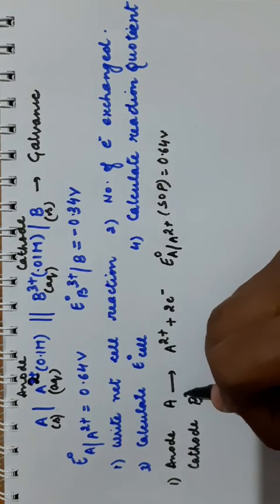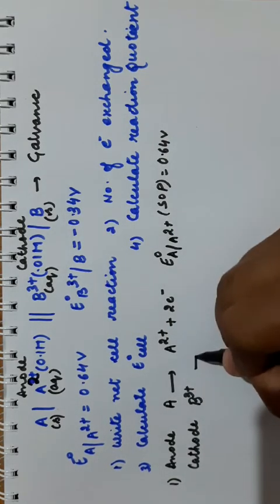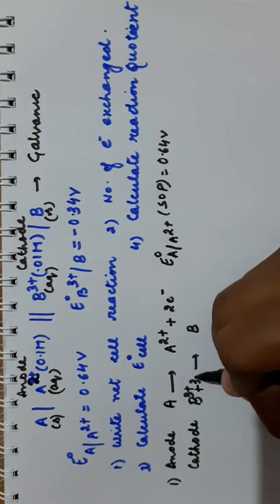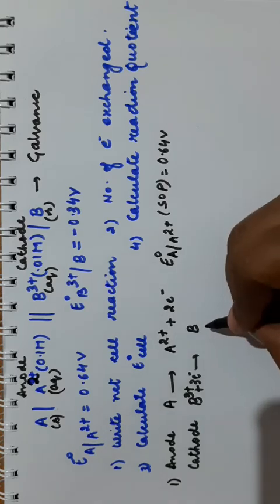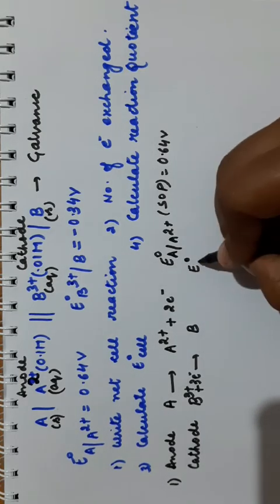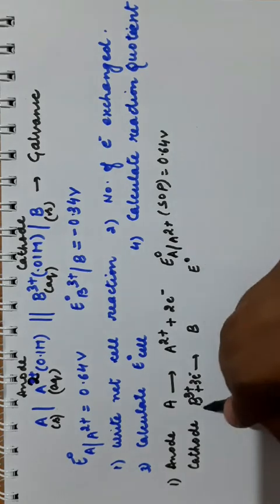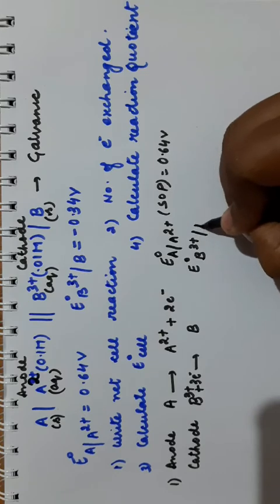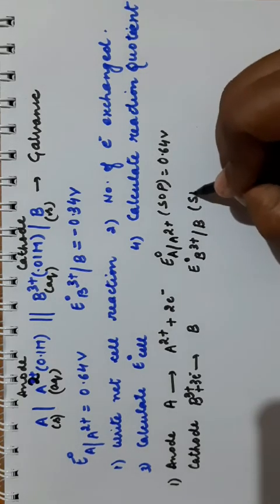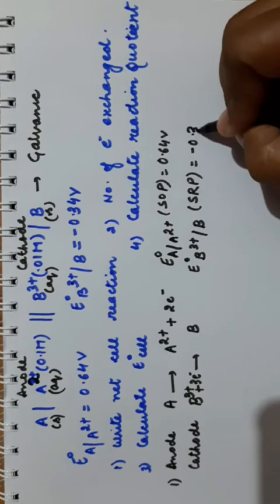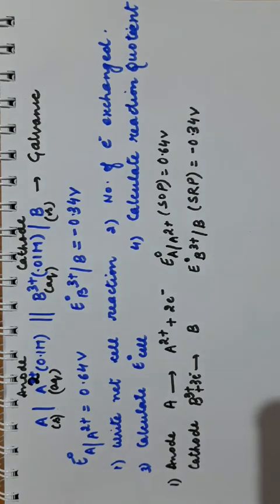At cathode: B³⁺ is changing to B. From +3 to 0, it has gained 3 electrons — reduction is occurring. The standard reduction potential E naught (B³⁺ → B) is given as −0.34 volt.